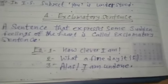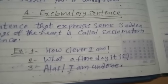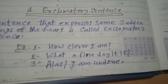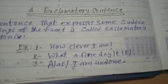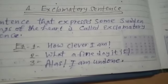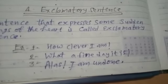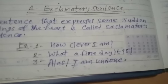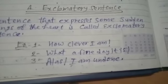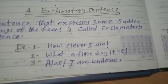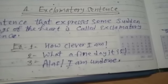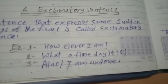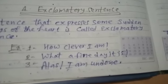Third example: 'Alas, I am undone.' 'Alas' — high apsos ki baat hai, dukh ki baat hai. 'I am undone' — 'May bharbaad ho gaya hoon, may bighda hoa hoon.' Fourth example: 'Hurrah, we have won the match.' 'Hurrah' khusy ki baat hai. 'We have won the match' — 'Hamne match jit lia hai.'